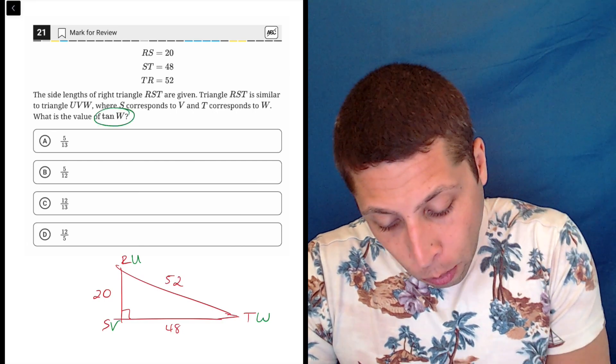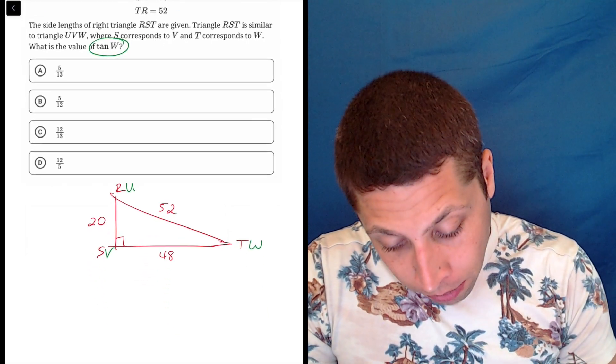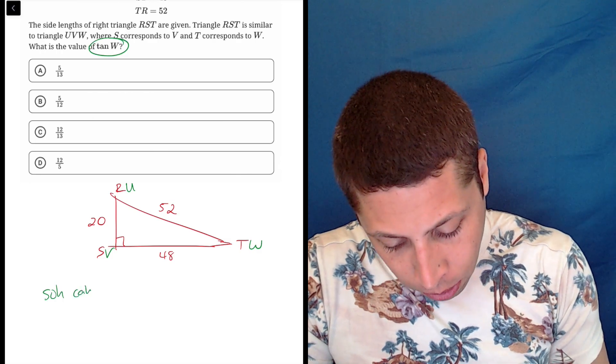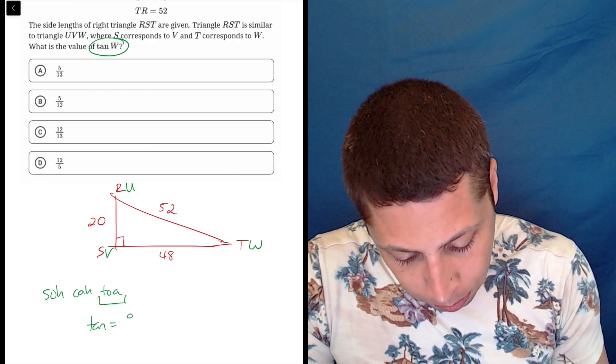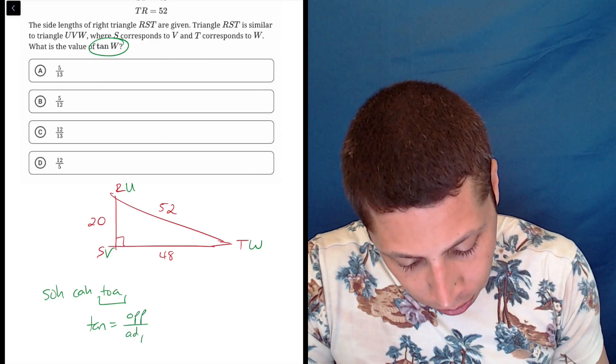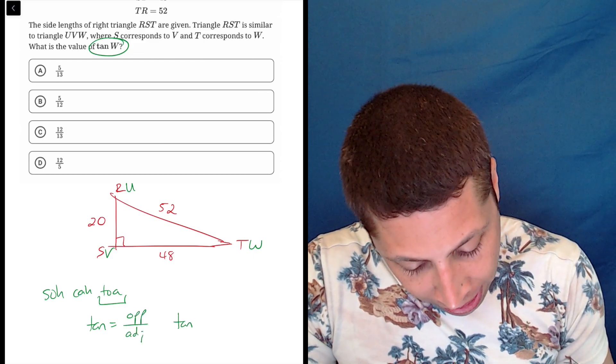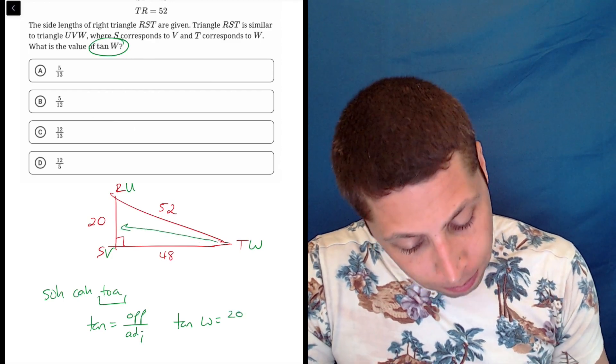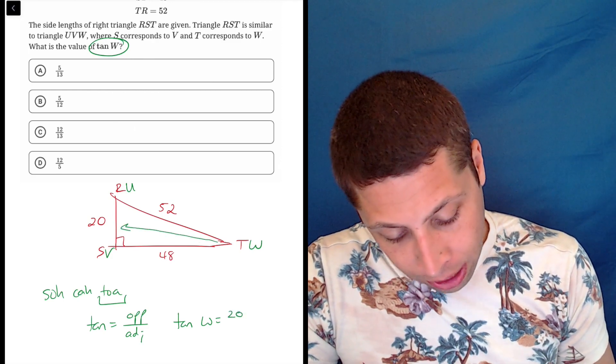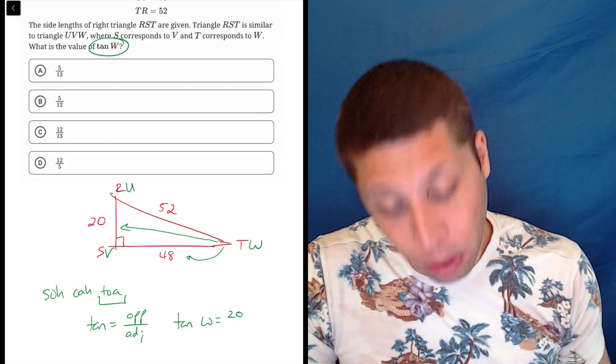Now focus on what they want. They want the tangent of W. And we can say, okay, so SOHCAHTOA, hopefully we have that memorized. Tangent is going to be the opposite over the adjacent. So the tan of W, the opposite of W is going to be this 20.